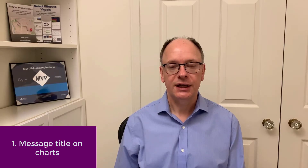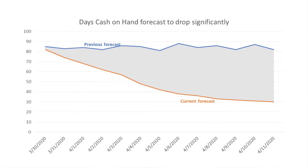First, make sure that every chart has a title that contains the key message of that chart. The title combined with the visual is going to create a light bulb moment for the executives so they understand the message and can make decisions based on it. Here is an example of a chart title that works with the chart to convey an important message about days of cash on hand — a critical metric during a crisis.